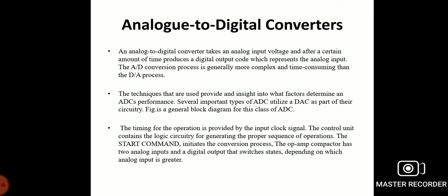Now we are going to discuss the analog to digital converter. An ADC takes an analog input voltage and after a certain amount of time produces a digital output code representing the analog input. The ADC conversion process is generally more complex and time-consuming than digital to analog conversion. Several important types of ADC utilize the DAC as part of their circuitry, with timing provided by an input clock signal and a control unit containing logic circuits for generating the proper sequence of operations.